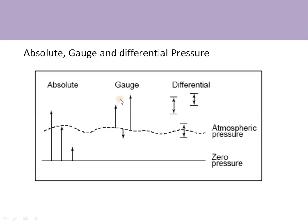If you want to measure pressure at two different points, differential pressure is used. One common application is the orifice plate — across the orifice we measure the pressure drop, and that pressure drop is proportional to the flow rate, so differential pressure is measured in that case.